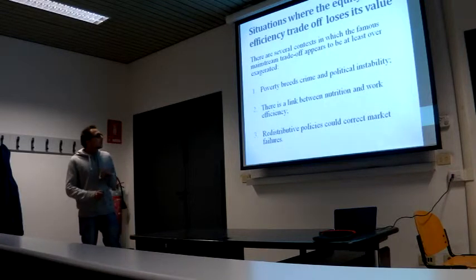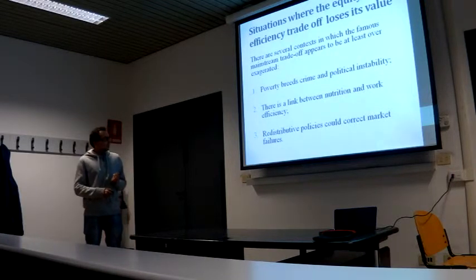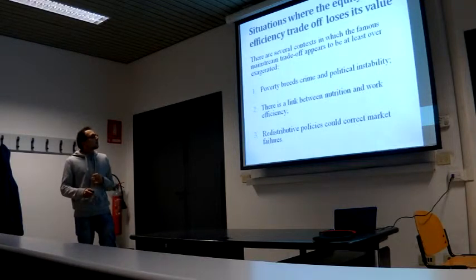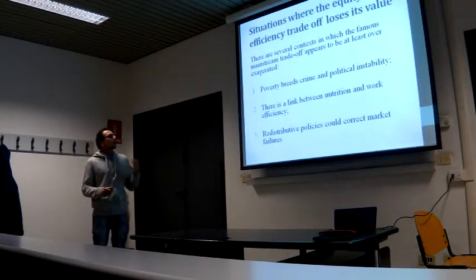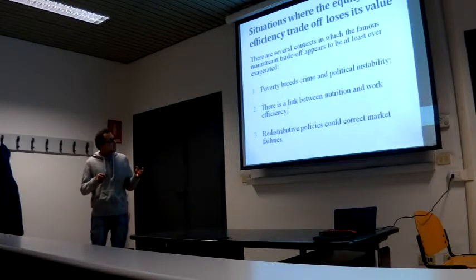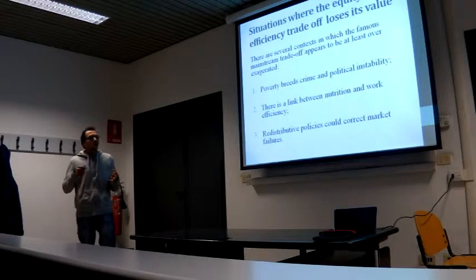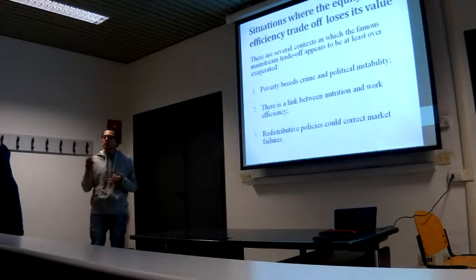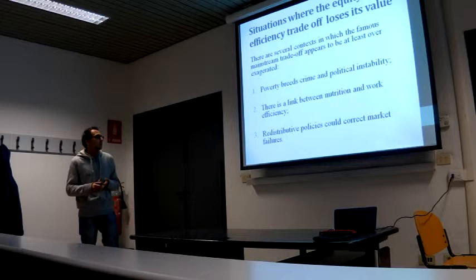And finally, and maybe the most important part of the paper, is whether there are redistributive policies that can correct market failures. As economists, we say that market failures are like externalities, asymmetric information, and the provision of public goods.